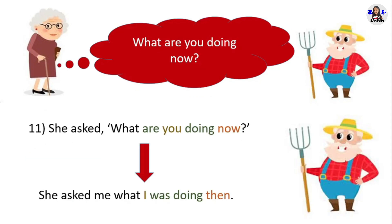Next example: 'What are you doing now?' She asked 'What are you doing now?' in direct speech. In reported speech, she asked me what I was doing then. 'Are doing' in present continuous changes into 'was doing' in past continuous. Pronoun 'you' changes into pronoun 'I.' The time expression 'now' in this question changes into 'then.'